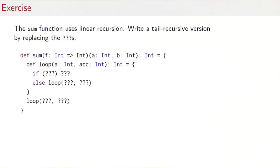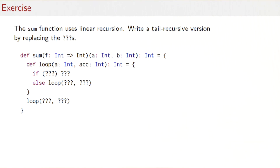Let's do an exercise. The sum function uses linear recursion. Can you write a tail recursive function instead? Note that unlike factorial, sum really could profit from this tail recursion optimization because if the interval between a and b is large, you might get a lot of recursive steps and risk a stack overflow. So let's design a tail recursive function instead. I've already given you a template for this function. It uses a nested function loop, and all you have to do is replace the triple question marks.